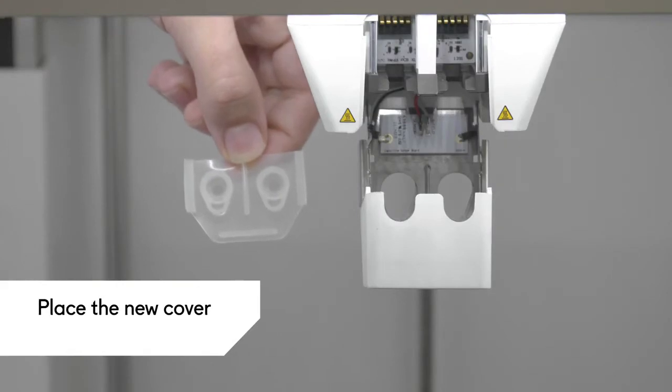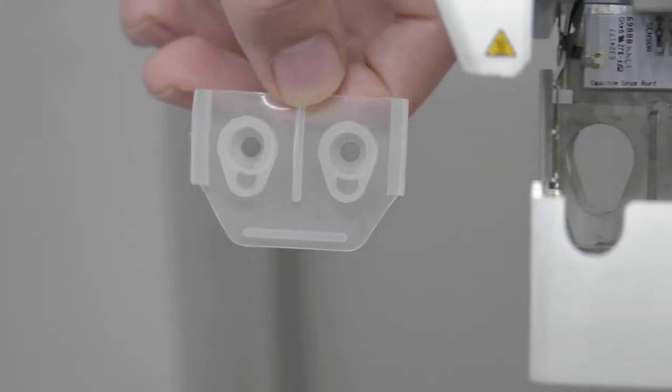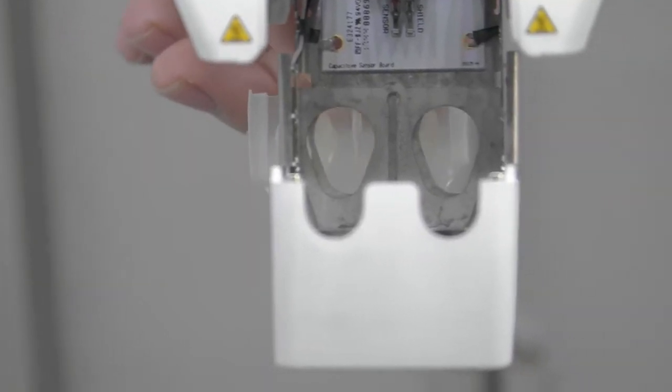Take the new nozzle cover and hold it behind the fan bracket in the correct orientation. Make sure the protruding shapes of the cover match the shapes of the holes in the bracket.